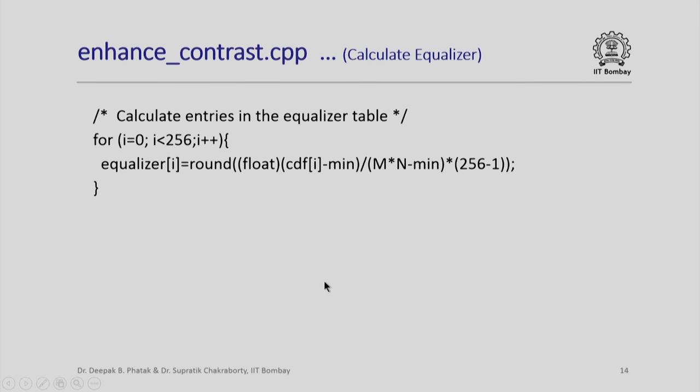Having done this, I am now ready to calculate entries into the equalizer table. Remember the formula: rounded value of CDF[i] minus min divided by M×N minus min times 256 minus 1. Please note that I convert this value into float to ensure that I get a floating point number which then is rounded off and this rounded value is assigned to the equalizer element.